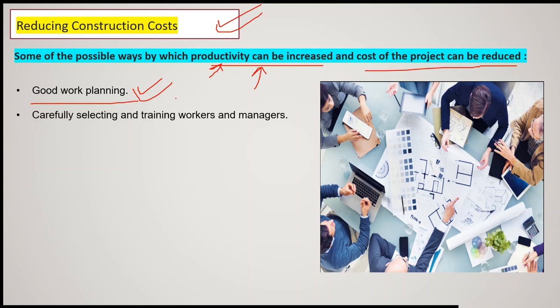Secondly, you can carefully select and train workers and managers. If you have already trained the manpower, their skill will improve and accordingly productivity will improve, reducing project cost. Efficiently scheduling labor also comes under planning — scheduling the utilization of labor, material, as well as equipment. If you are able to plan the schedule such that labor, material, and equipment are used at their optimum level, the project cost will definitely decrease.